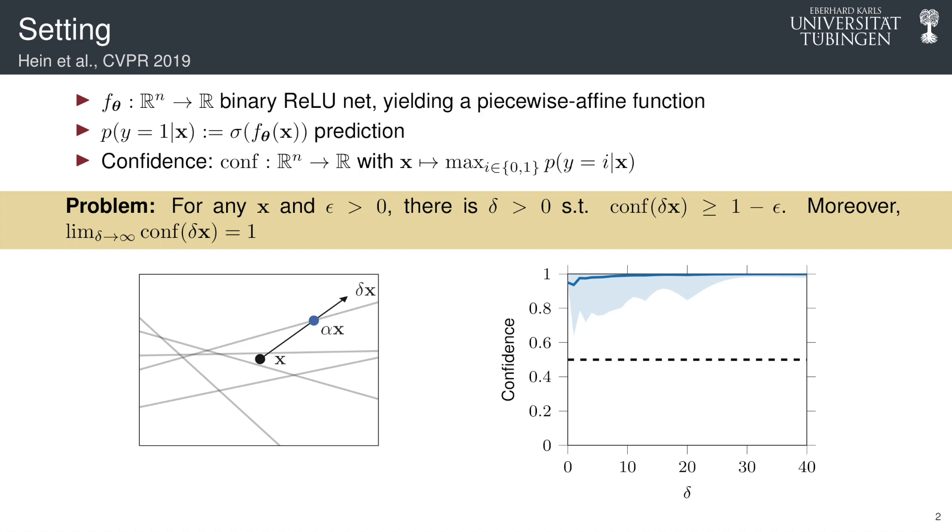And indeed, as δ is sufficiently high, let's say δ equal to 30, the confidence already converges to one for all points.